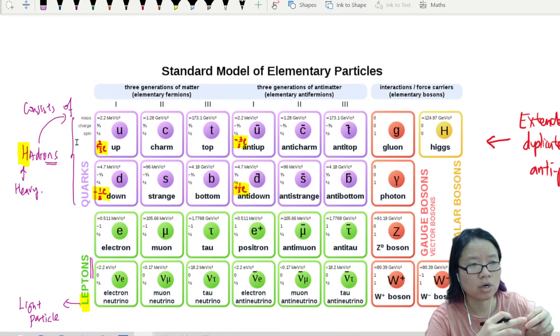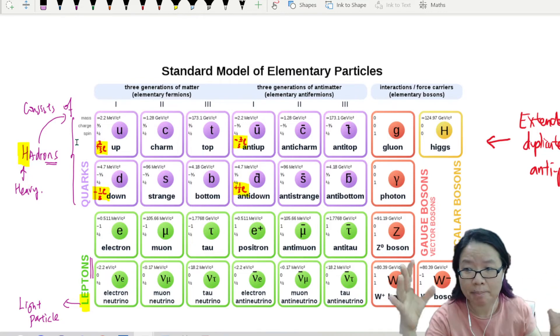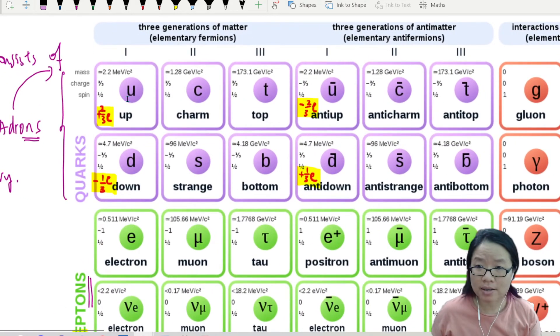If you watch the lecture video, we will explain to you how to build it up. We'll start from the up quarks, okay? And then we build up all the quarks. And then we flip it to have an anti-quark.